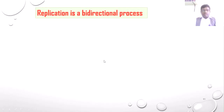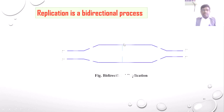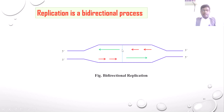Replication is a bi-directional process. When helicase unwinds DNA, the replication fork or replication bubble is formed and replication starts at two points — from 3' to 5' and 5' to 3' on respective strands. One strand is continuous (leading strand) and another is discontinuous (lagging strand). The replication is bi-directional, not unidirectional.